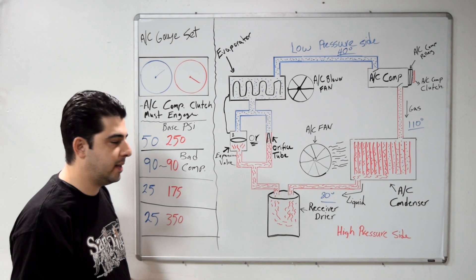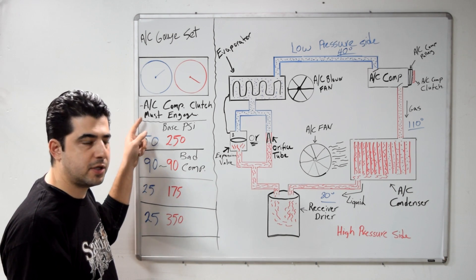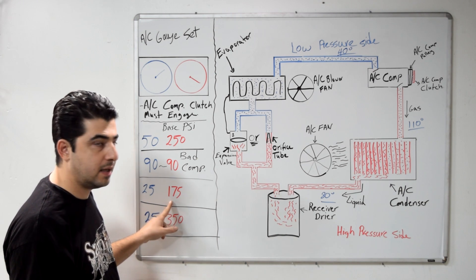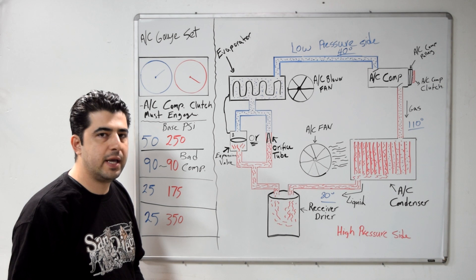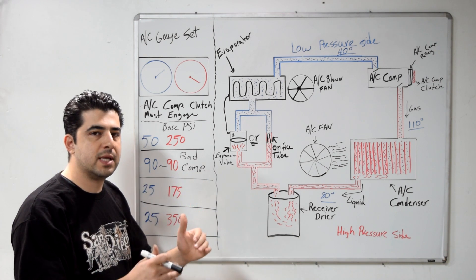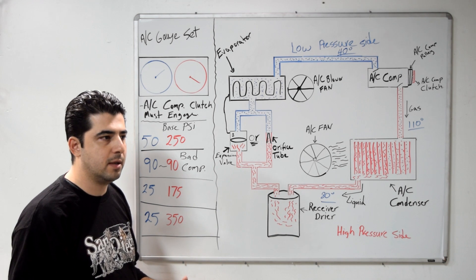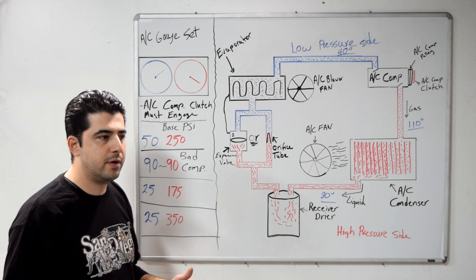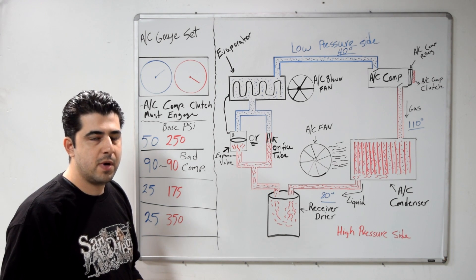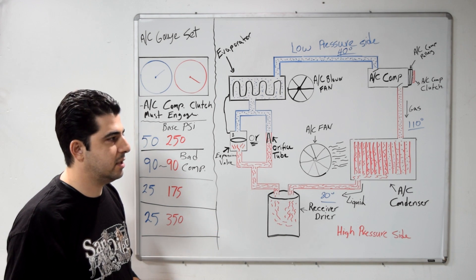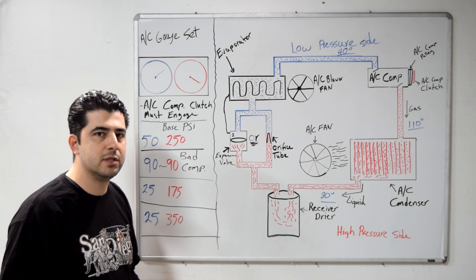Next, if you get 25 on the low side — which is lower than base pressure — and 175 on the high side — also lower than base pressure — and both sides are proportionally lower, the most likely scenario is that you're low on refrigerant and need to add some. It's not low enough to have disabled the compressor clutch, but it is low enough that you won't get nice cold air from your vents until you add refrigerant.